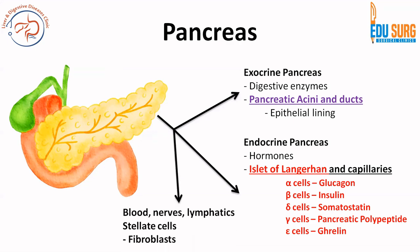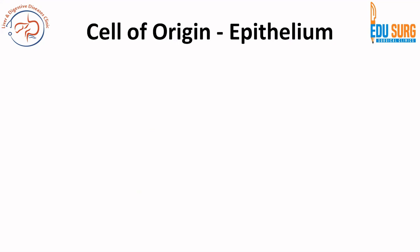Beyond the exocrine and endocrine pancreas is the stroma, in which these structures rest. This area contains blood vessels, lymphatics, and the stellate cells or fibroblasts when active. All these cells can give rise to tumors in the pancreas.